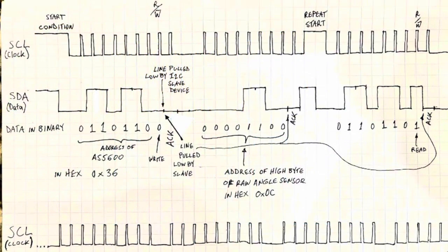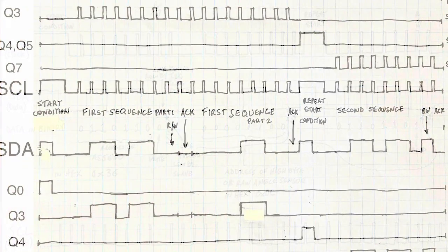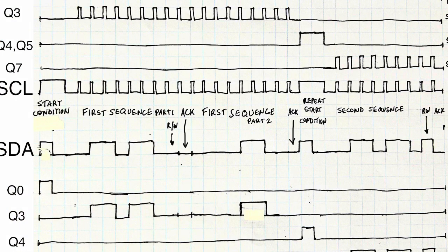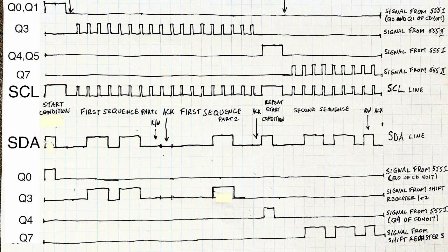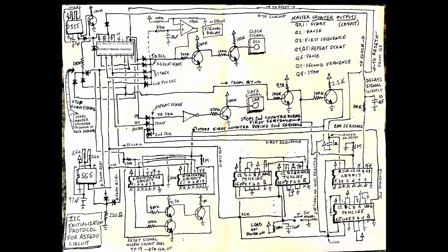Today, we're going to complete the hardware, quote-unquote, program for this. If you remember the implementation, we used a whole bunch of different counters and shift registers in order to enter the clock pulses of the data and OR them together. This is the final working schematic of the entire, quote-unquote, program of the I2C initialization protocol.